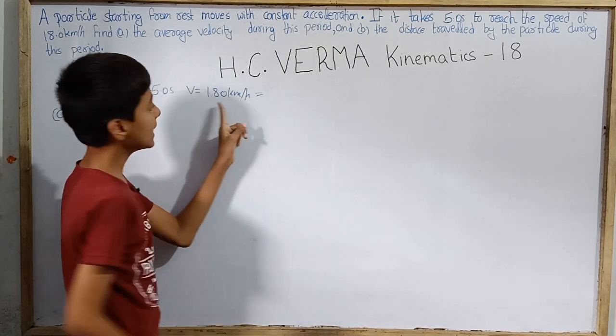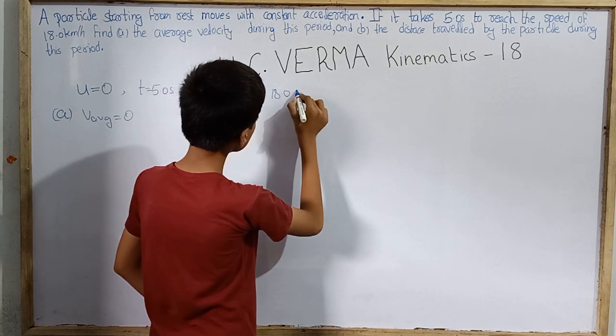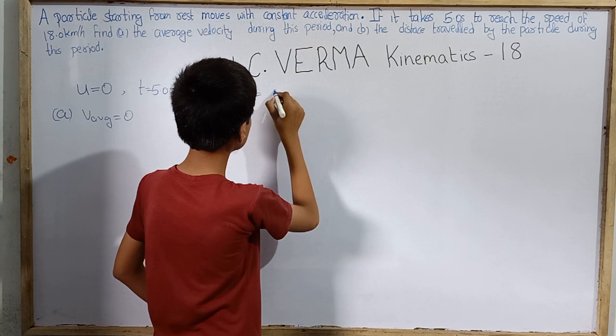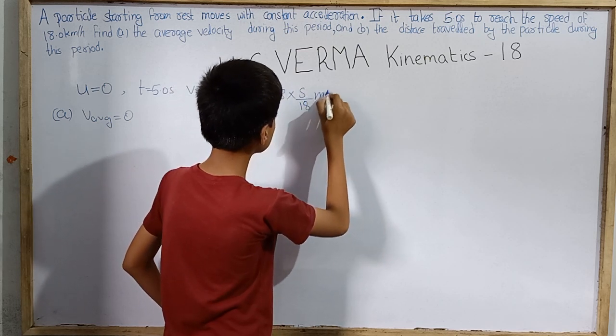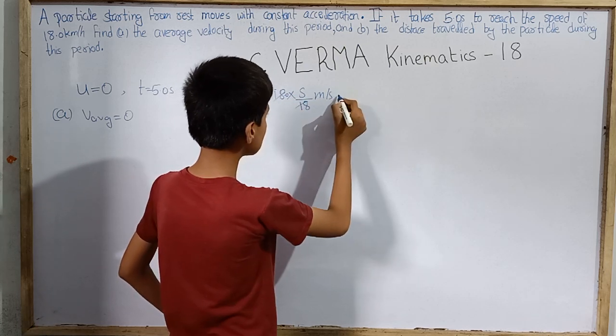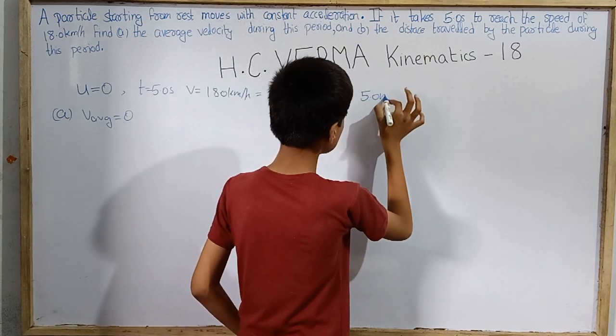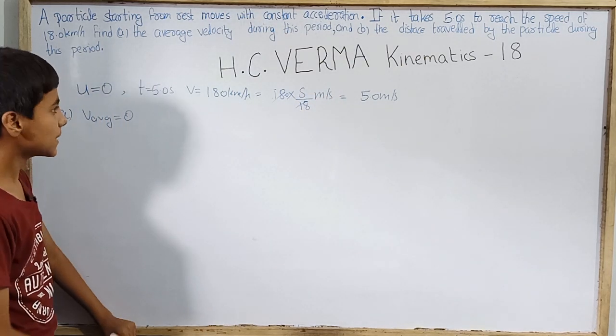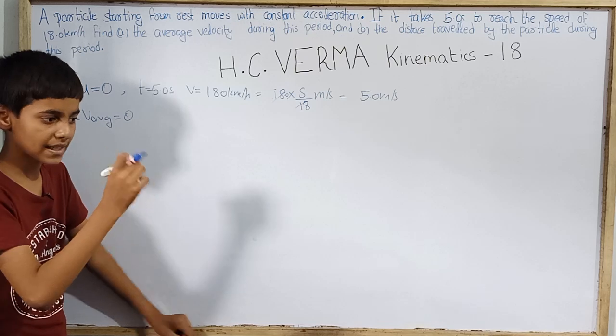First, the units are 18.0 km per hour. In 1 km per hour, we multiply by 5 by 18 to get m per second. So here 18.0 times 5 by 18, this is cancelled, 1.0 times 5.0 meter per second. We got final speed in 5 seconds is 5.0 meter per second.